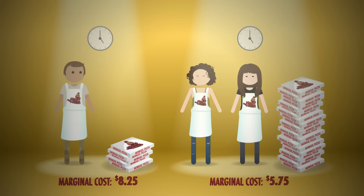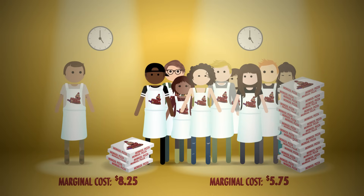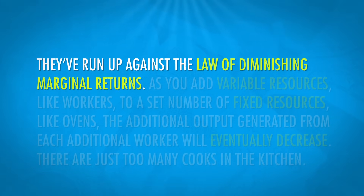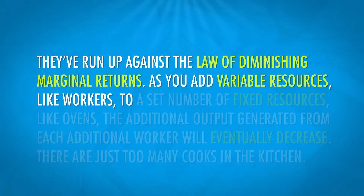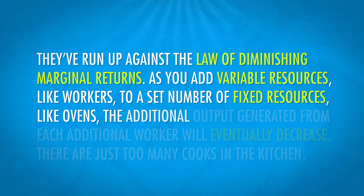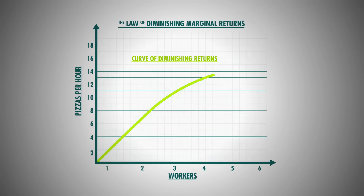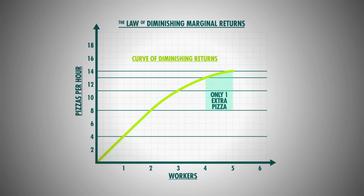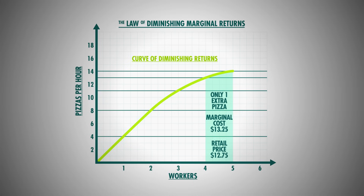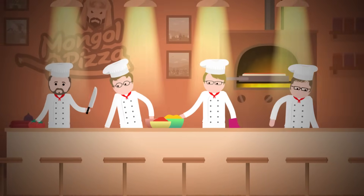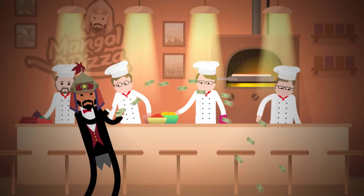But the benefits of specialization are limited. As the company continues to hire more and more workers, the total amount of pizzas produced each hour increases at a slower rate — they've run up against the law of diminishing marginal returns. As you add variable resources like workers to a set number of fixed resources like ovens, the additional output from each additional worker will eventually decrease. There are just too many cooks in the kitchen. Eventually they'll reach a point where hiring another worker only adds one more pizza to their hourly total, and the marginal cost of that last pizza is likely higher than the revenue from selling it. So to maximize profit, a company should produce where marginal cost is up to, but not greater than, marginal revenue.